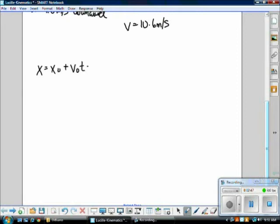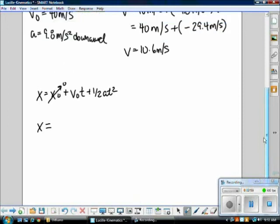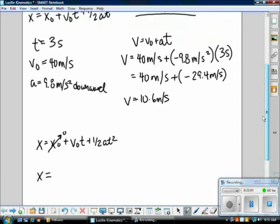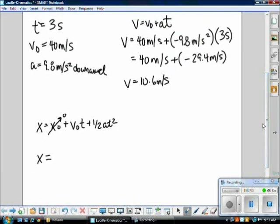x-naught is zero because it starts from ground. Then, you plug in all the information that was originally given. v-naught is 40 meters per second. Time is 3 seconds plus one-half. Acceleration is 9.8 meters per second downward again, so it's negative. And then, time is 3 seconds once again.